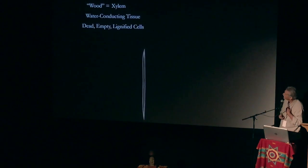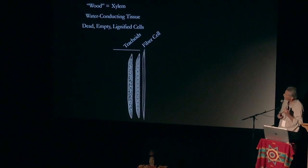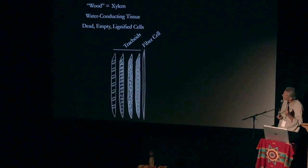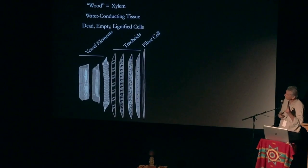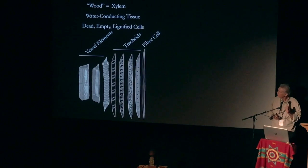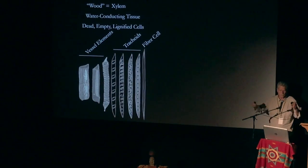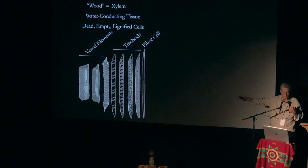Those cells are fiber cells in the wood and tracheids with various cell wall thickenings, and vessel elements that look very similar — shorter, with holes in the ends. So these are the cell types that fungi need to decompose. Look at that tree — it's mostly these cell types.